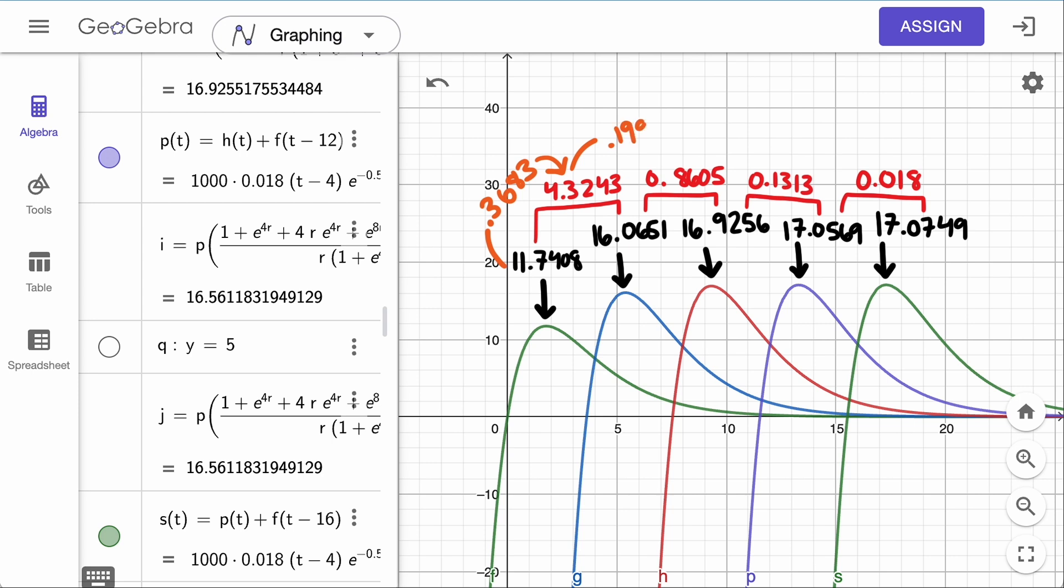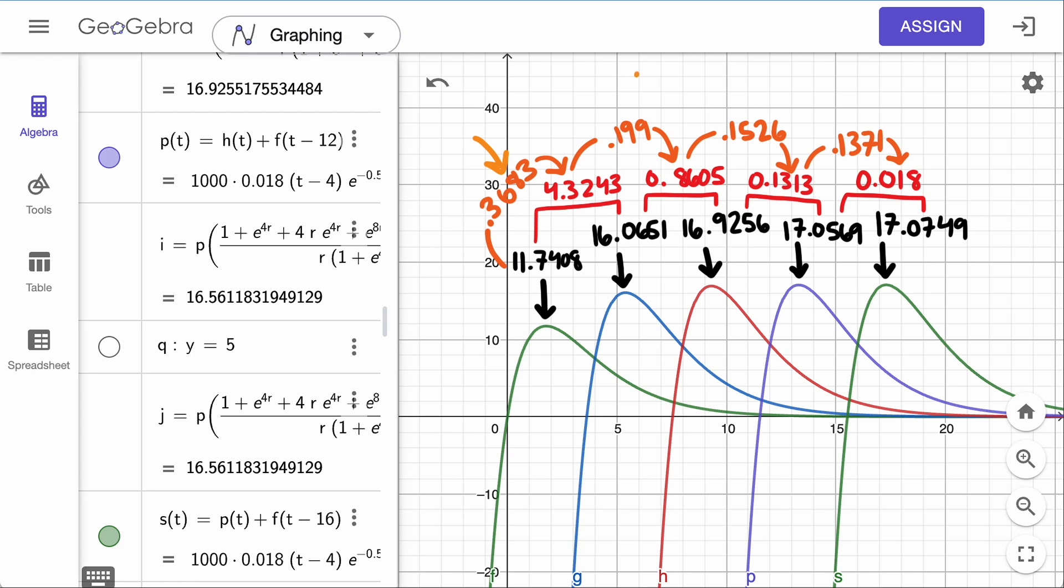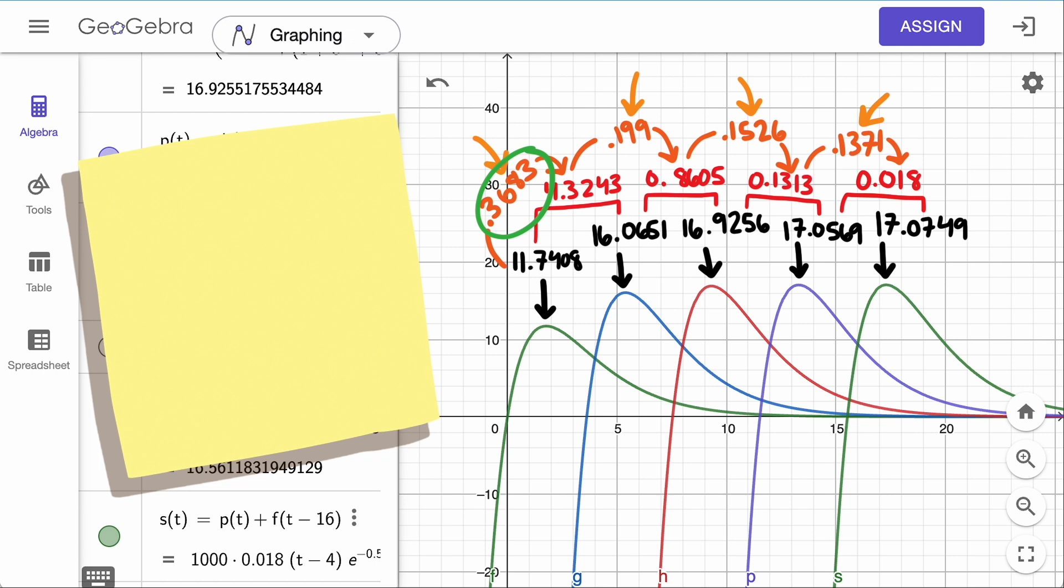If they are, then the common ratio between each value should be the same. Unfortunately, they are not. But the ratios keep going down, so a geometric series would be an overestimate. So we could find an upper bound by assuming each value is found by multiplying this first ratio, which is the largest, and using our formula for the sum of the geometric series.